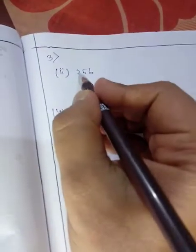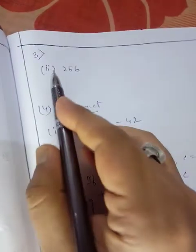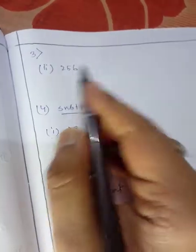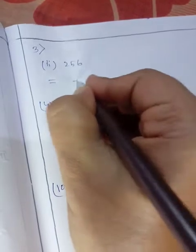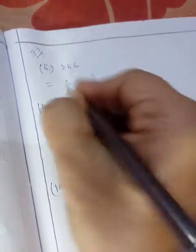Now the third one is the question for the number 256. The question is: what is the additive inverse of 256? So the additive inverse of 256 is -256.